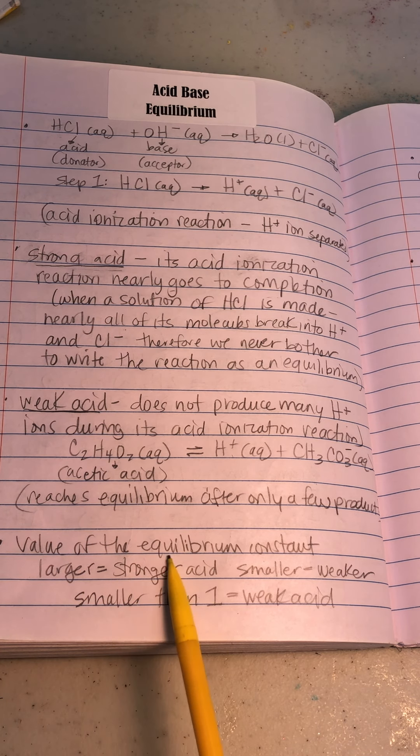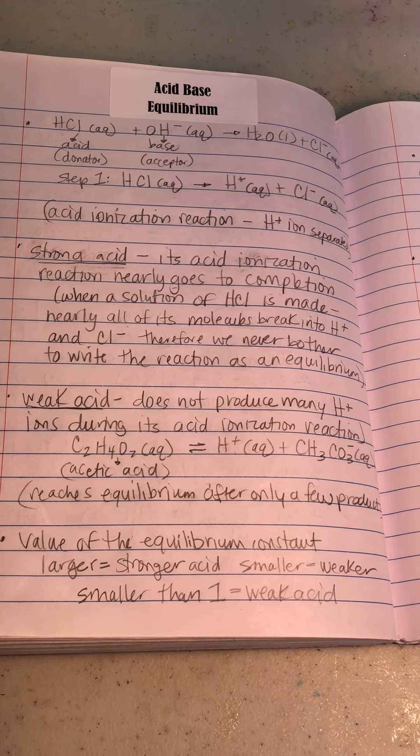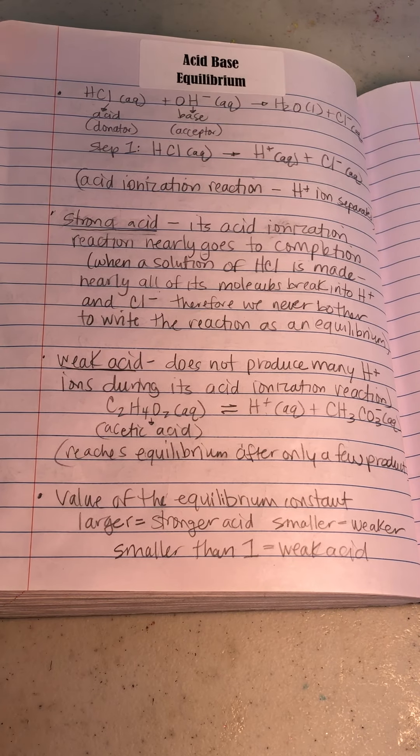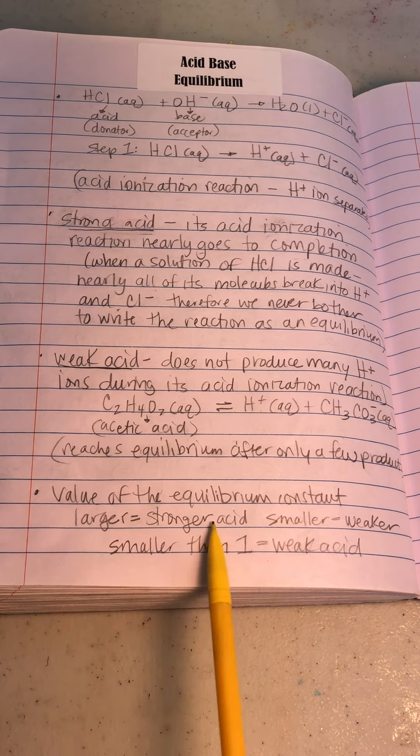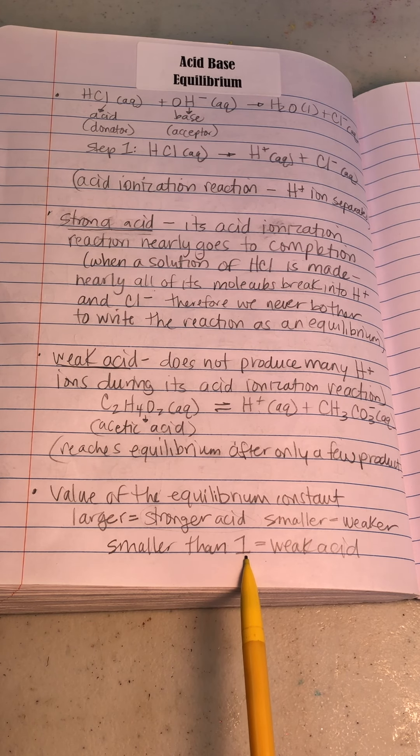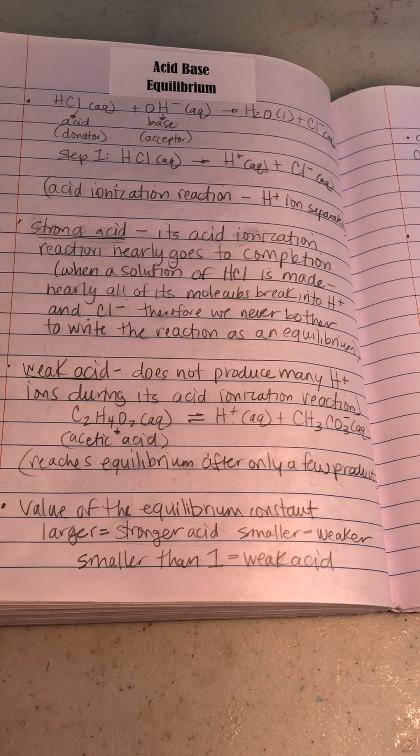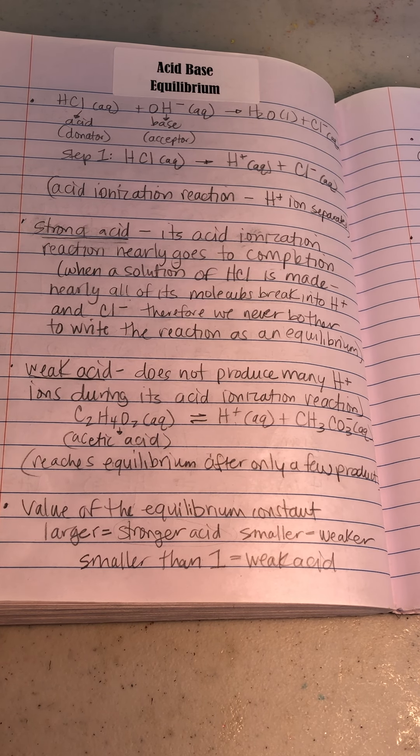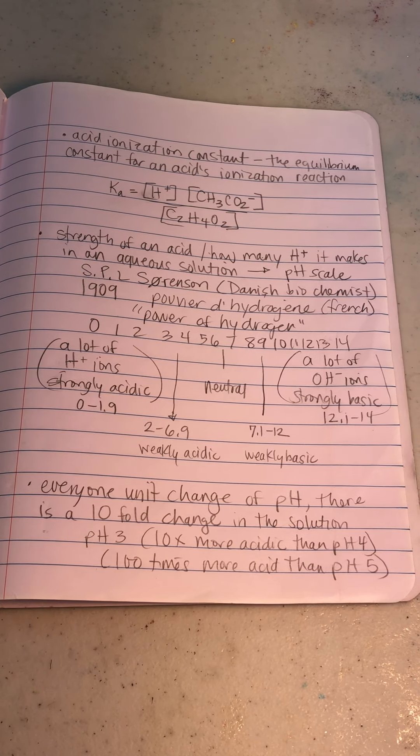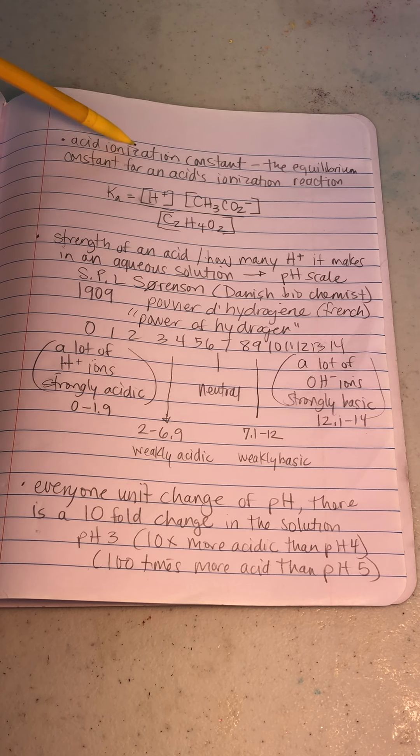It's basically gonna become in its equilibrium state when there's only a few products. So if there's only a few products that are formed, then this reaction is leaning more towards the reactant side because not a lot of products formed in it. It doesn't mean it didn't happen, it didn't work, but not as many as something in this situation where it's a strong acid. So it reaches equilibrium after only a few products form. So here's the idea. The value of the equilibrium constant, if it's larger, so when we're calculating, still the same thing, we're doing the calculations with the trying to find the K. So when we have the value of the equilibrium constant larger, then it's a stronger acid. If it's smaller, it's a smaller number, it's a weaker acid. If it's smaller than one, then it's equal to a really weak acid.